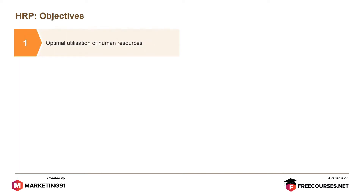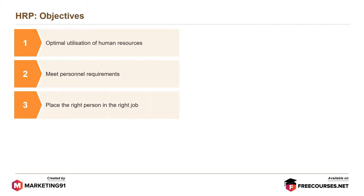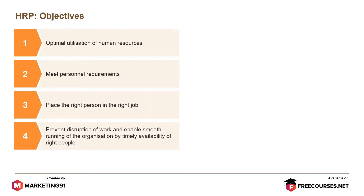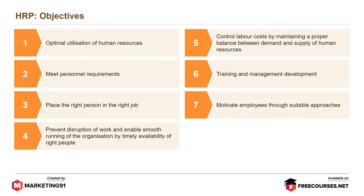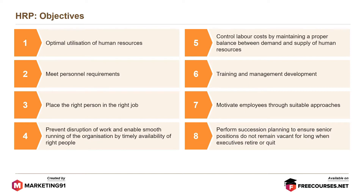The objectives of HRP are: optimal utilization of human resources; meeting personnel requirements; placing the right person in the right job; preventing disruption of work and enabling smooth running of the organization by timely availability of the right people; controlling labor costs by maintaining a proper balance between demand and supply of human resources; training and management development; motivating employees through suitable approaches; and performing succession planning to ensure senior positions do not remain vacant for long when executives retire or quit.